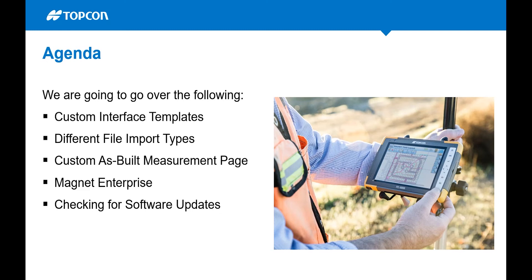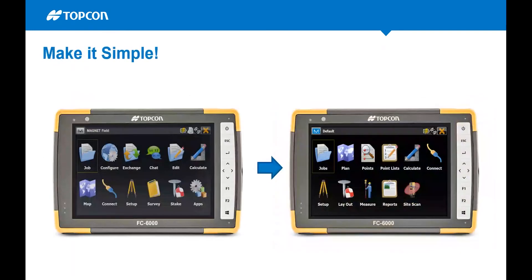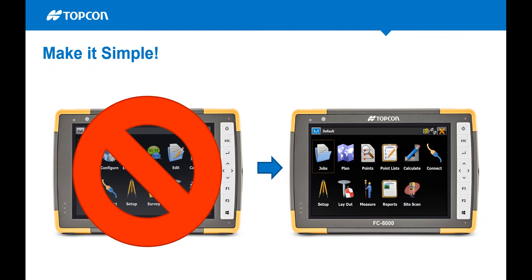When you want to go in and do your as-built, we'll cover how to make it easier and more comfortable for you. Then we'll talk about Magnet Enterprise and its benefits, and last but not least, checking for software updates. On the left side of the screen is our traditional Magnet Field interface — exactly what you'll see when you download it. On the right side it's still Magnet Field, just simpler, with some features turned off that you don't need.